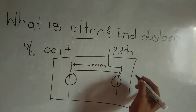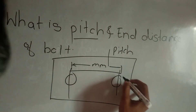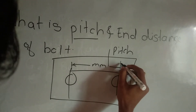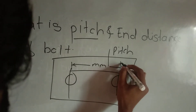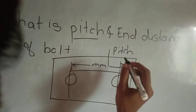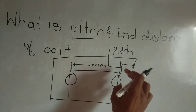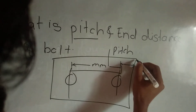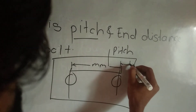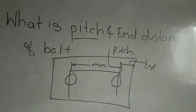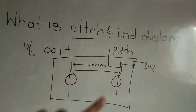The end distance of the bolt is the distance from the center of the end bolt to the end of the plate. This is known as end distance. So this is all about pitch and end distance of bolt.